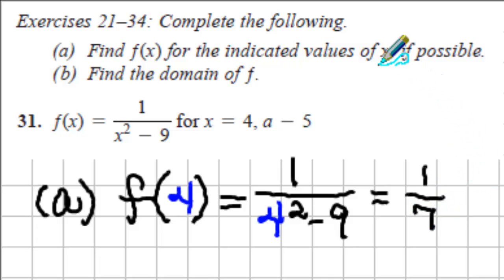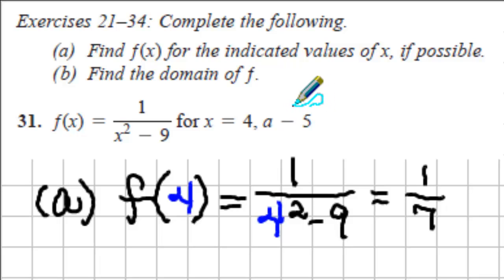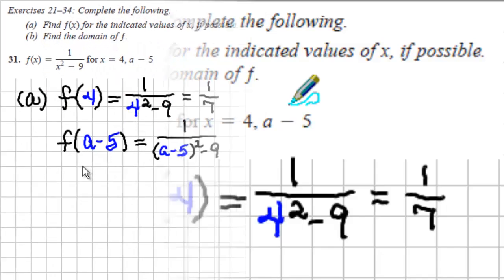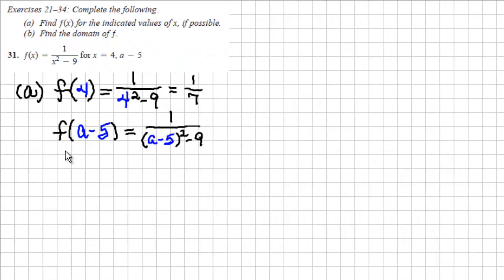The next indicated value of x is the expression a minus 5, so we'll need to substitute that expression for each x. We get f is equal to 1 over the square of a minus 5, minus 9. To simplify this expression we can square the binomial.